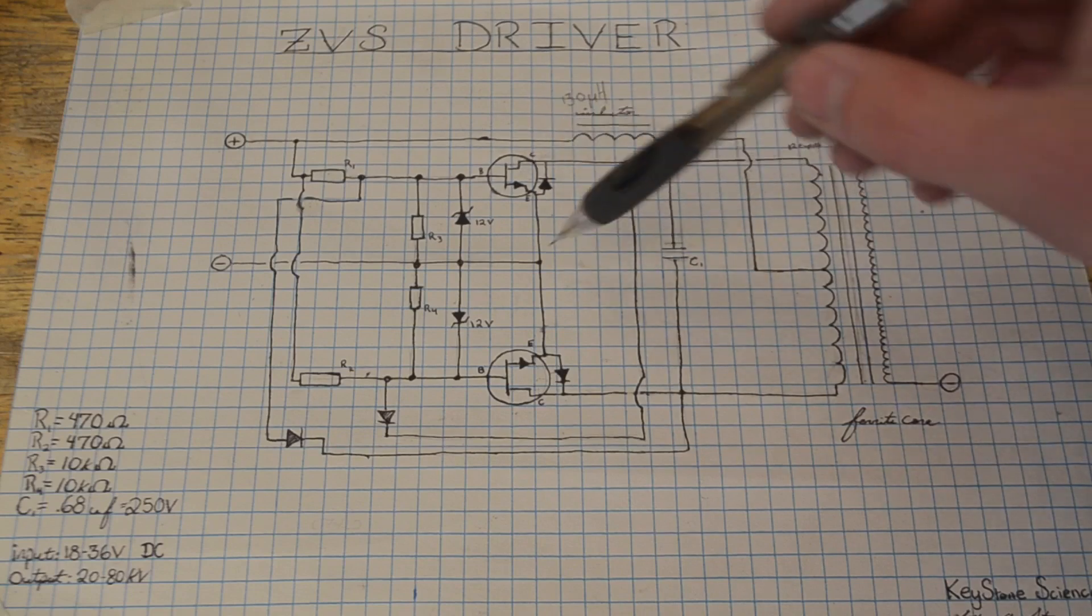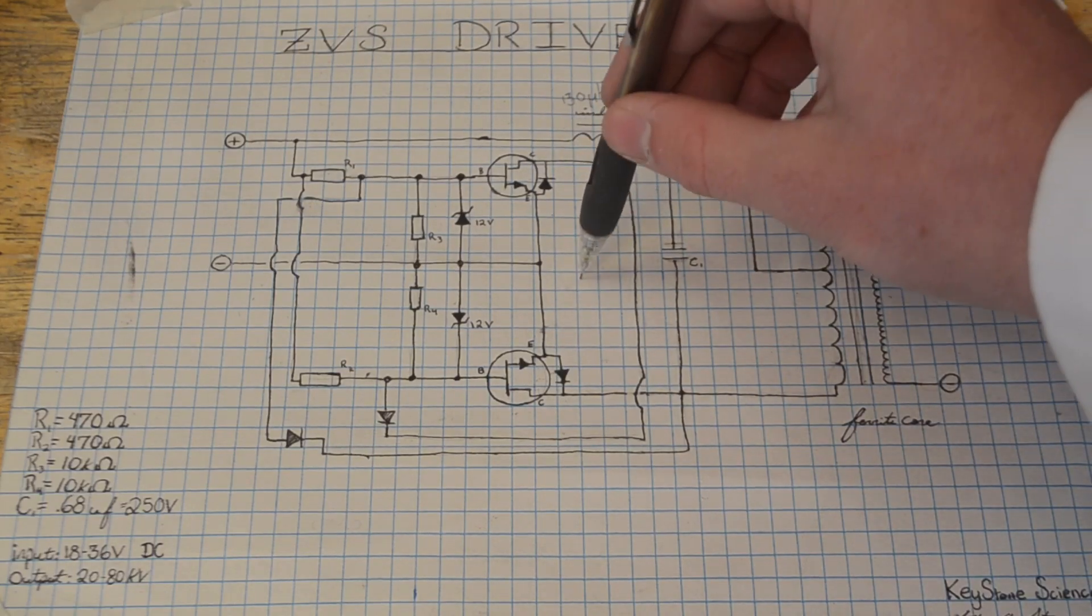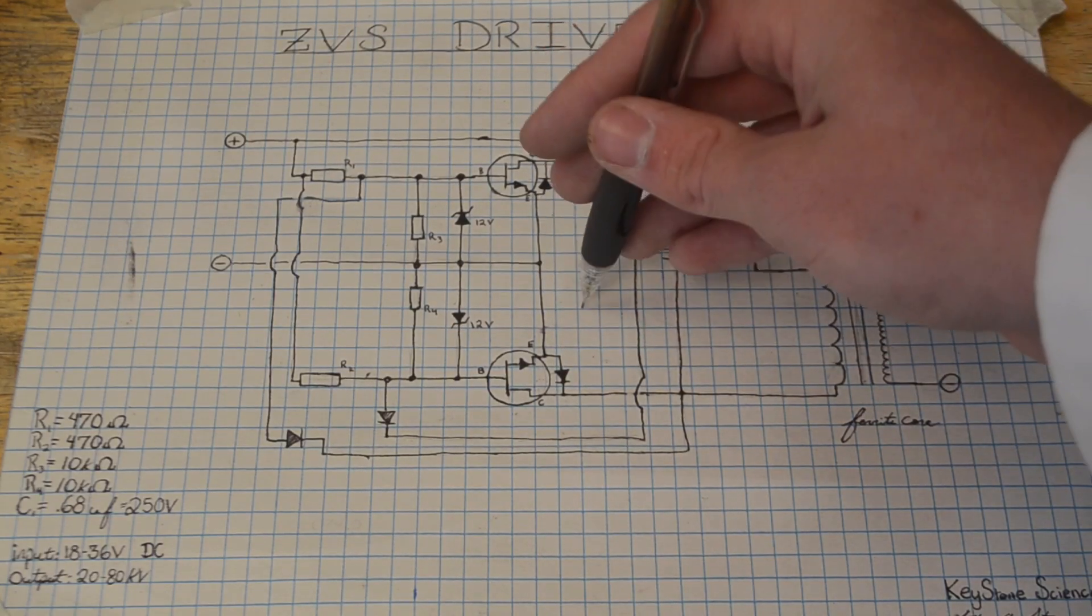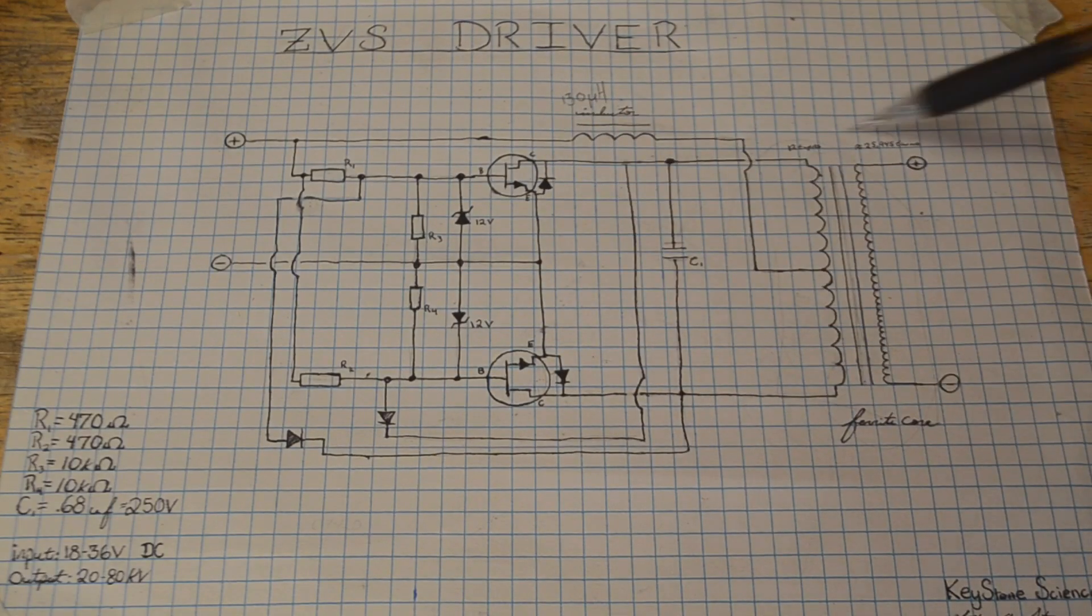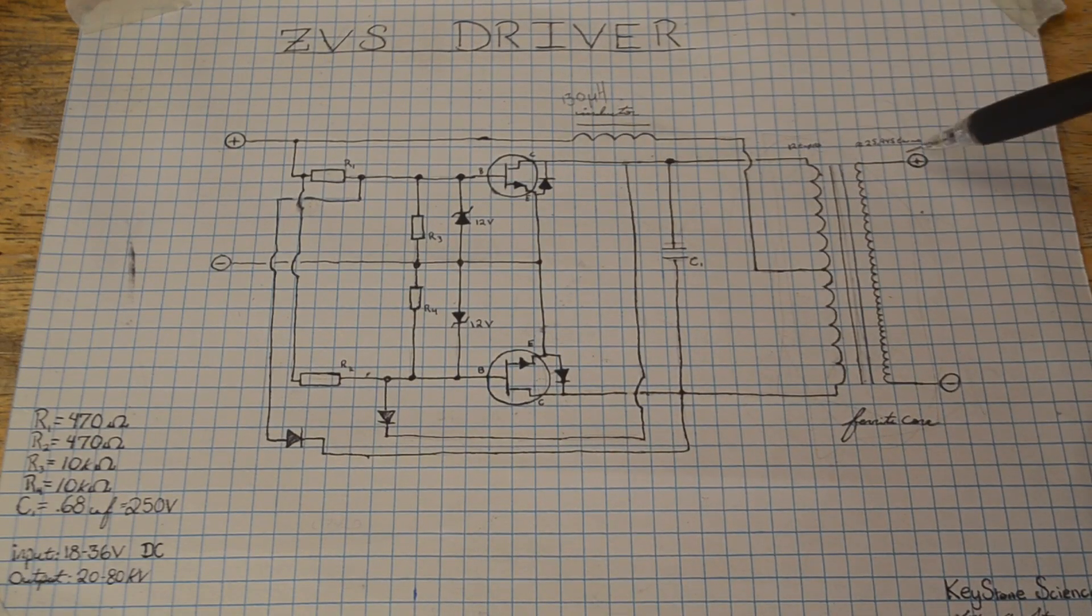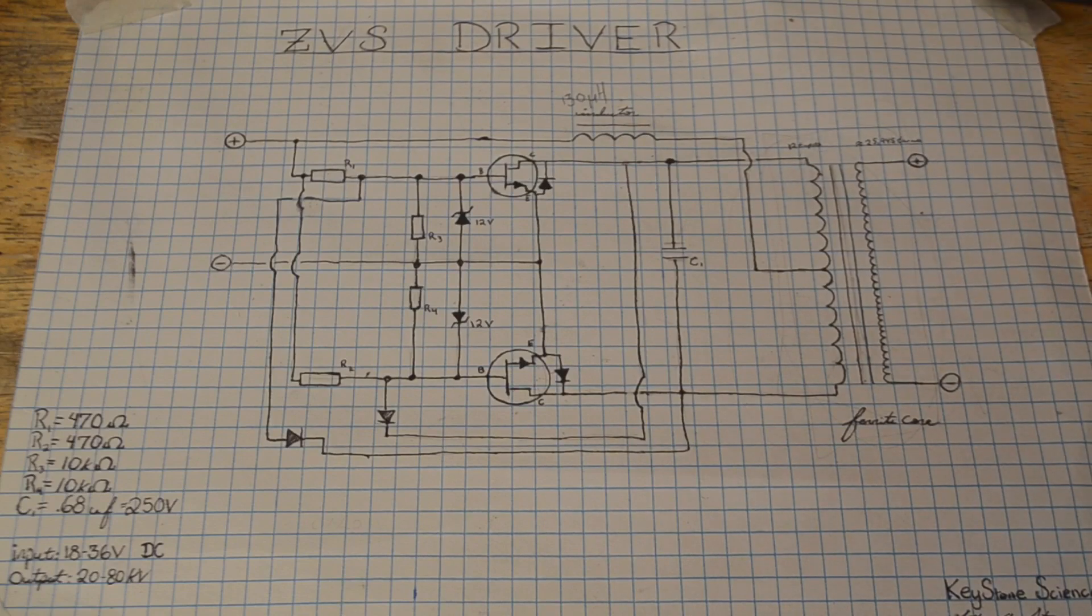As for these two MOSFETs, I'm going to be using the IRFP 250N. However, if I had it, I'd be using the IRFP 260N because it can handle a bit more. And this over here is going to be a flyback transformer that I'll show you guys how to wind in a little bit. So anyways, let's get building this circuit.